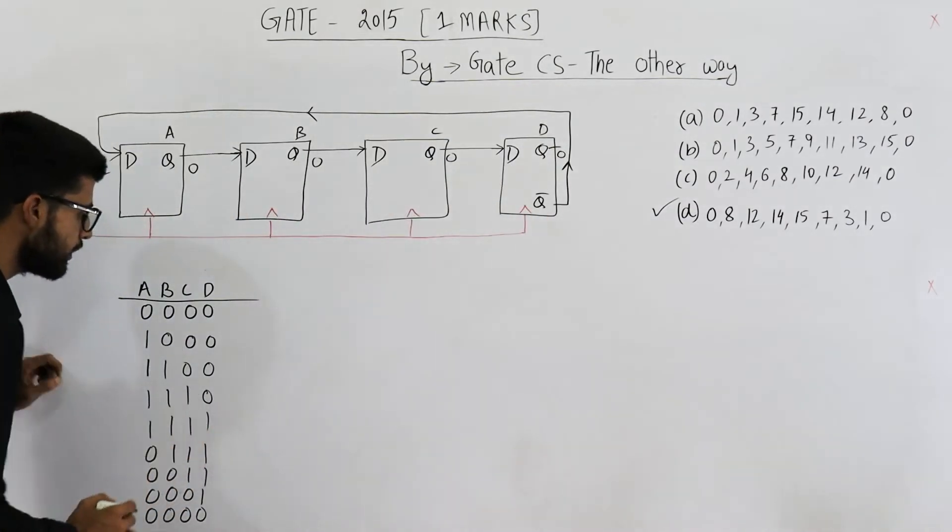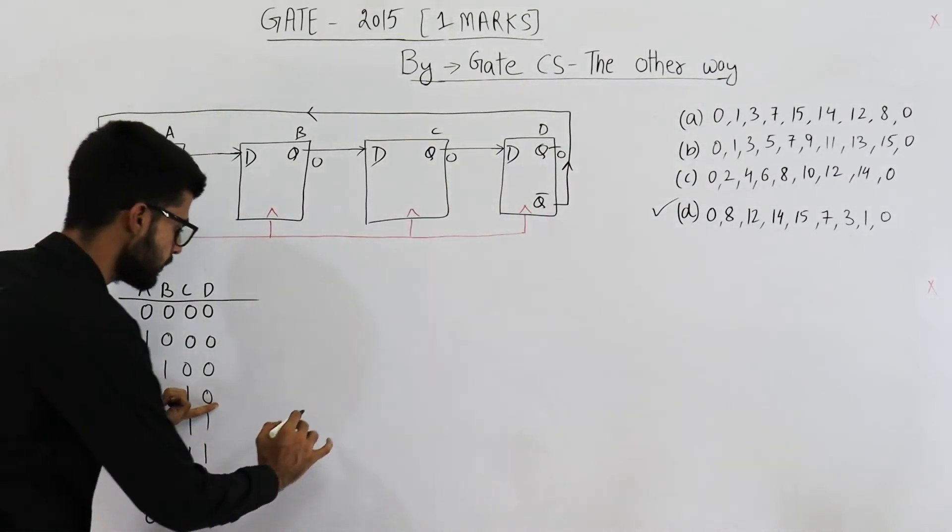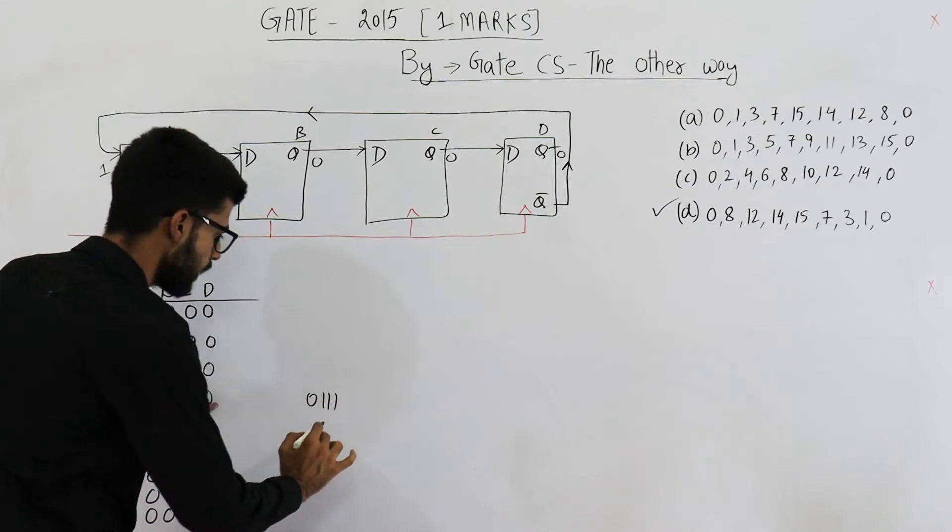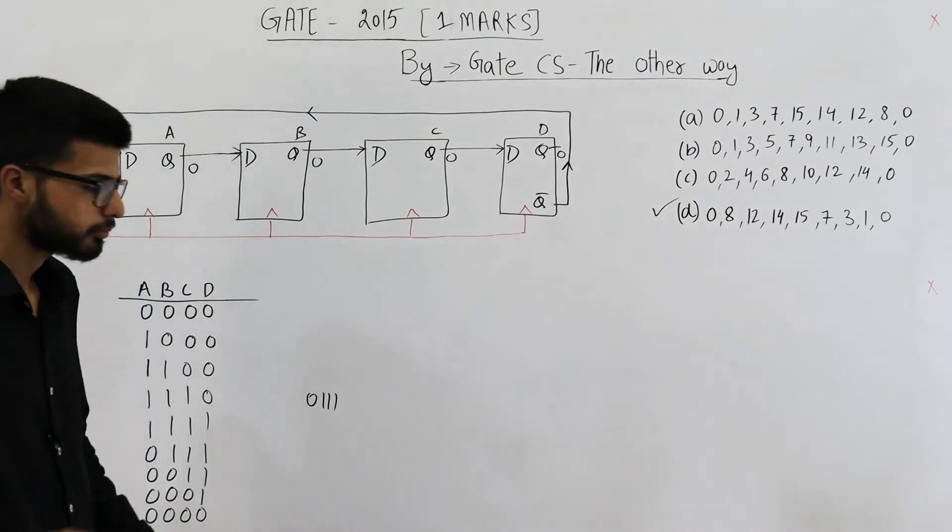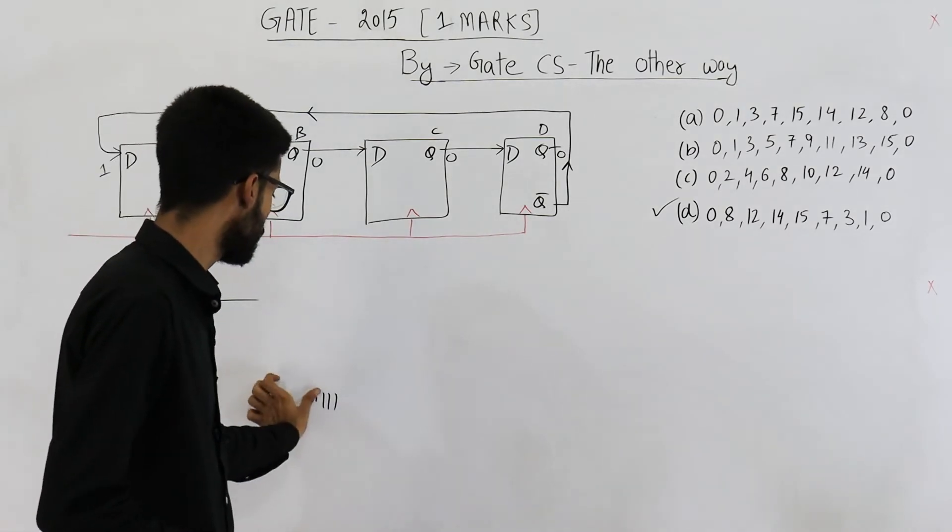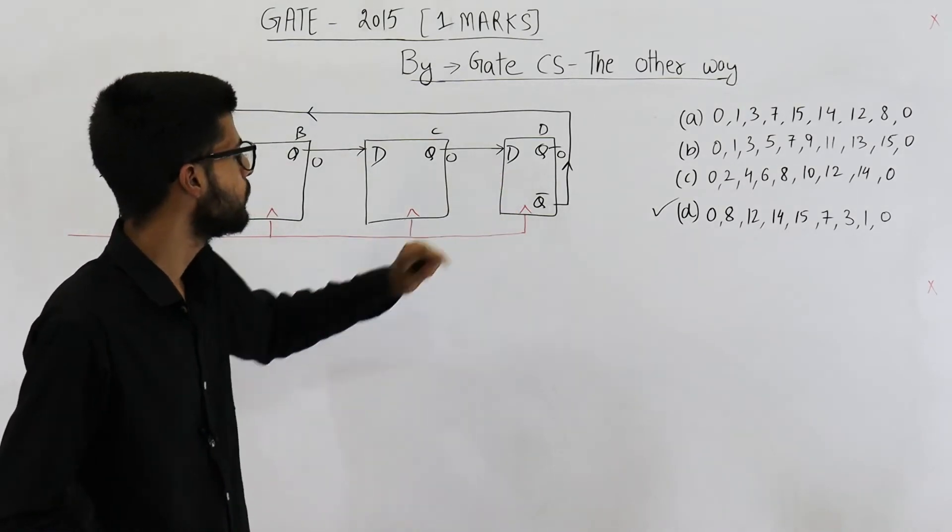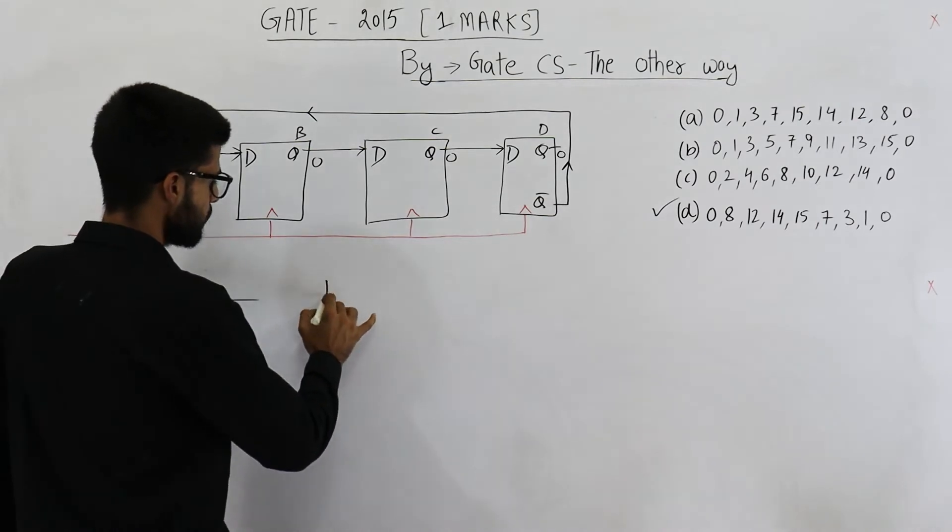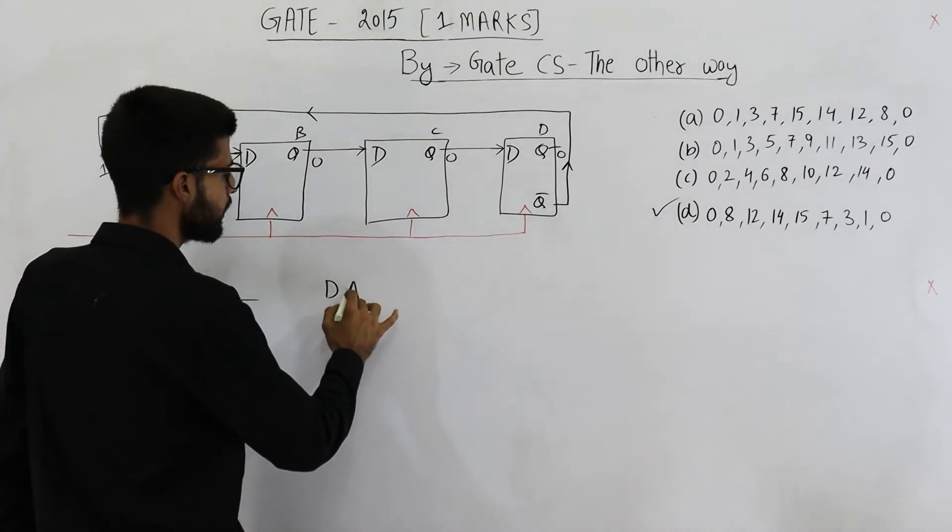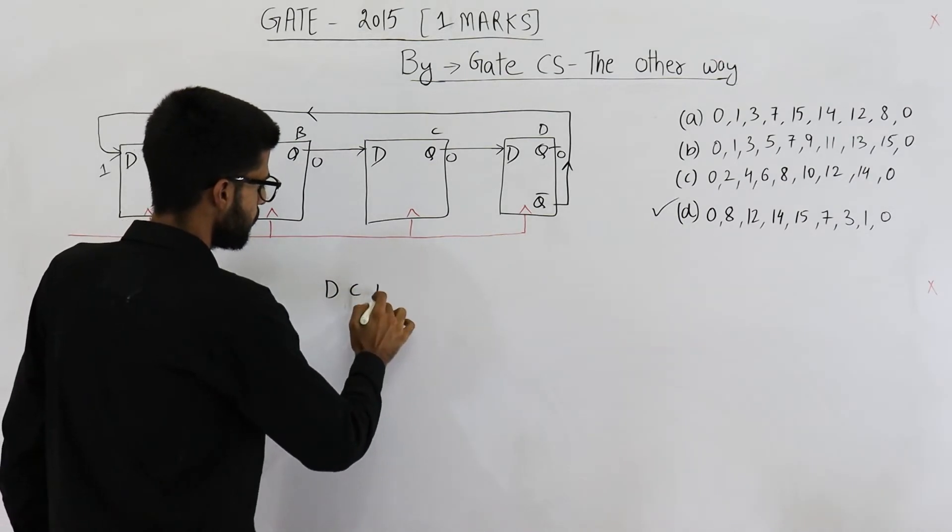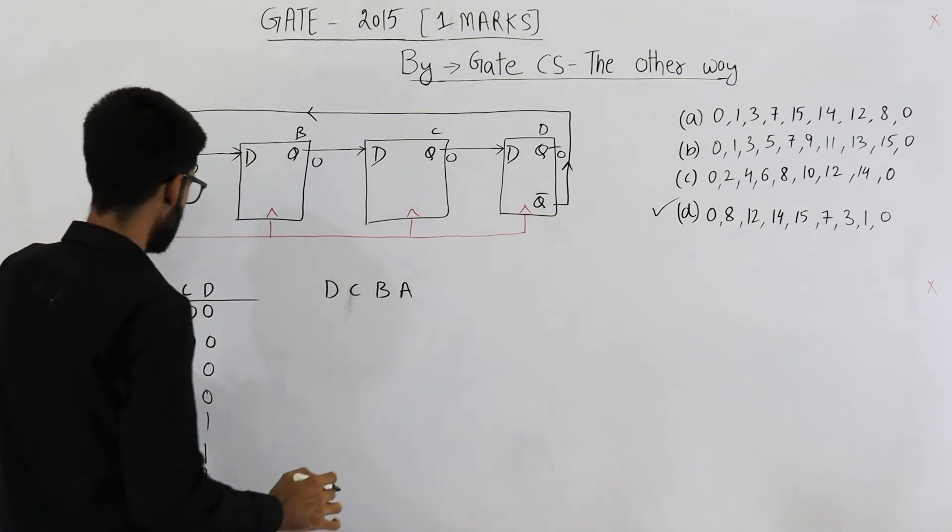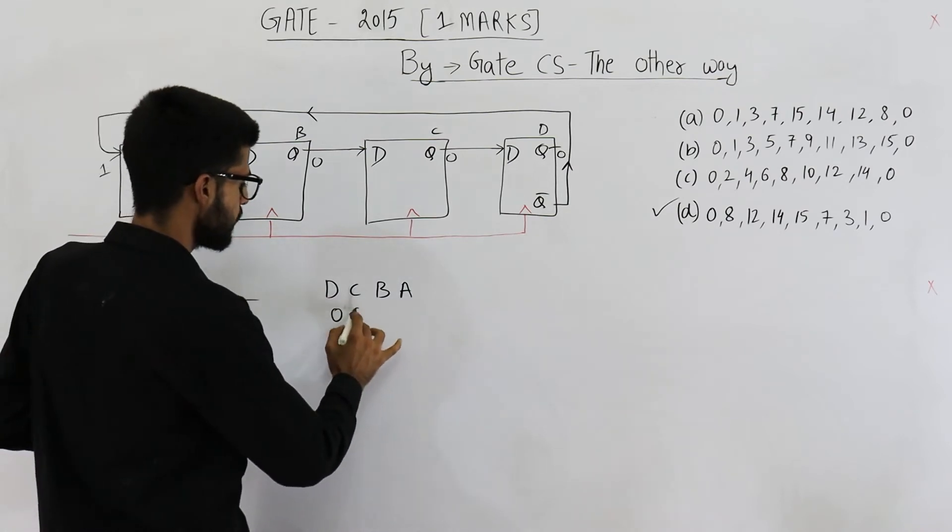Now, after we have done with this, the thing is, how do we interpret this 4 bit number? I can start from this side. I can say this number is actually 0, 1, 1, 1. It is not 14. I can say it is 7. That is the difference. Now, if I take this one to be the MSB, that means I will say my output or my current state is D, C, B, A. So, all 0s, we are starting from this.